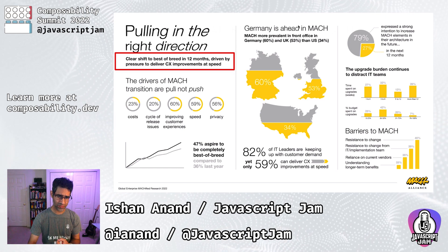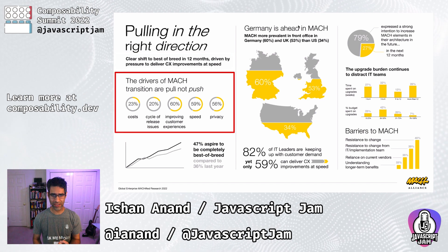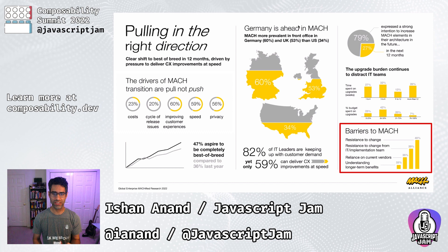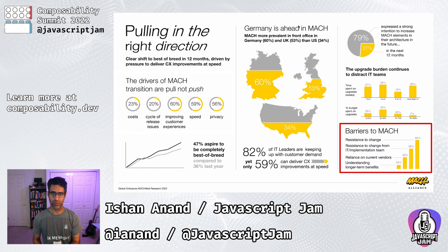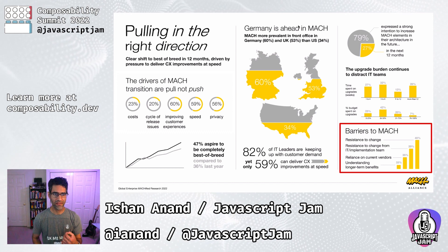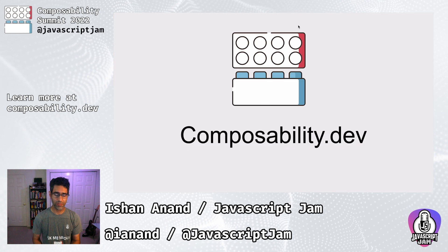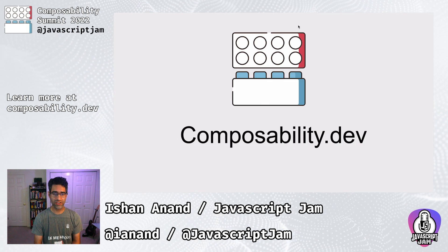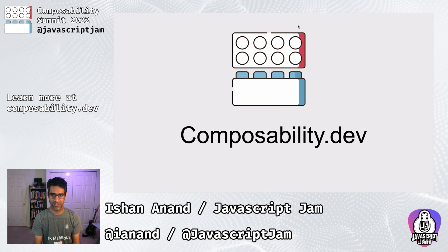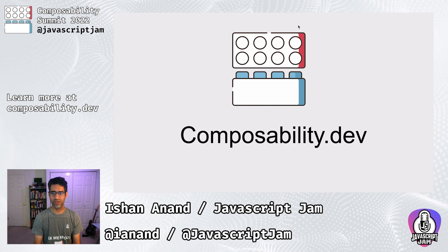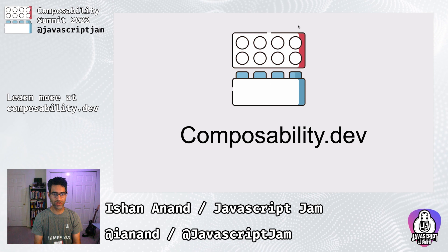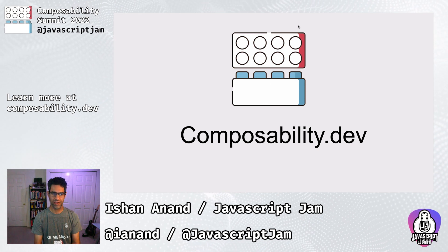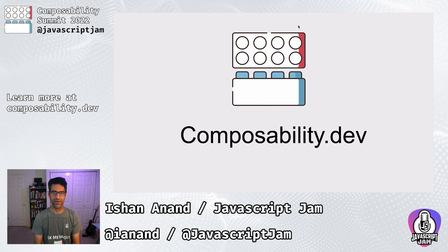We also see this in the data from the MACH Alliance. Companies are being pulled towards a composable architecture driven by the need to have a faster implementation time for digital experiences. And the biggest barrier isn't understanding the benefits — it's actually the resistance to change in figuring out how to decompose their existing stack. That's where the Composability Summit and Composability.dev come in. Over the next few days, we'll have a series of talks to introduce composability, and we'll be building on this material in the weeks and months ahead. We hope you find it useful — sit back and enjoy.